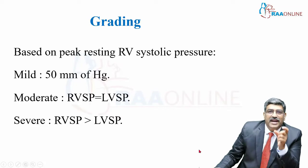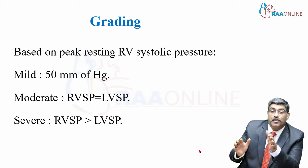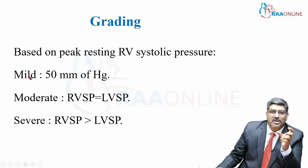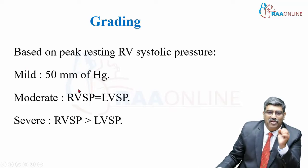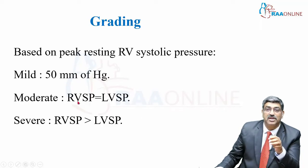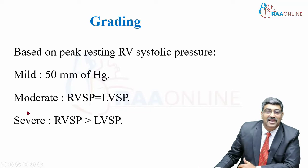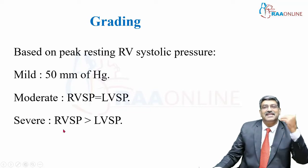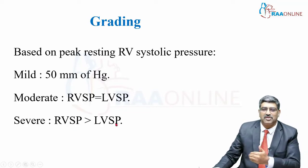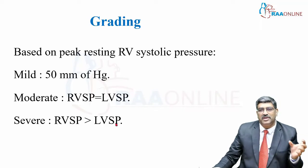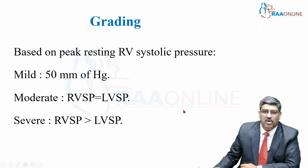Grading pulmonary stenosis based on RV systolic pressure: in mild pulmonary stenosis, the RV systolic pressure is around 50 mmHg. In moderate, the RV systolic pressure equals LV systolic pressure. In severe, it exceeds the left ventricular systolic pressure.